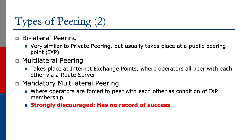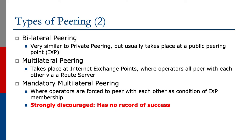Mandatory multilateral peering is strongly discouraged — it has no record of success. There are one or two places in the world where the exchange point and the members have agreed on a mandatory multilateral peering policy, and this works for them in their particular circumstances. But the vast experience around the globe has shown that bilateral peering and multilateral peering are the most successful types of peering taking place at Internet exchange points.